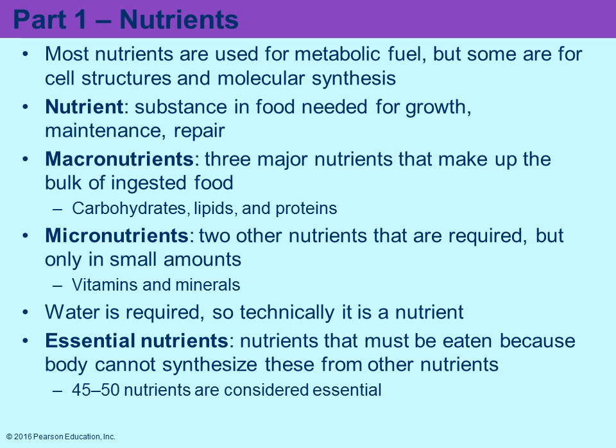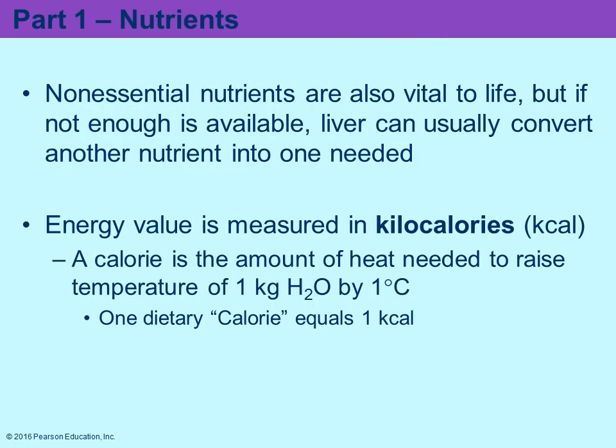Micronutrients are required but only in very small, minute amounts — things like your vitamins and minerals. Water is required for life, so technically it could be classified as a nutrient. Essential nutrients are those that must be eaten; they have to be taken in through your diet because the body does not make them. Non-essential nutrients are also necessary for life, but the liver can usually convert one nutrient to the one that's needed.